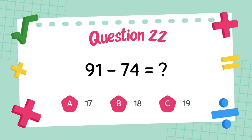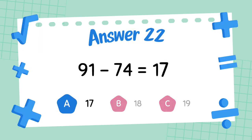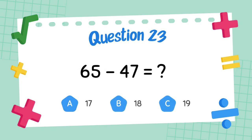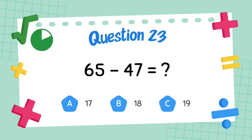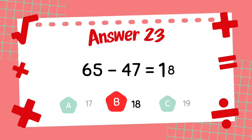What is 91 minus 74? The answer is 18. What is 84 minus 66? The answer is 18.